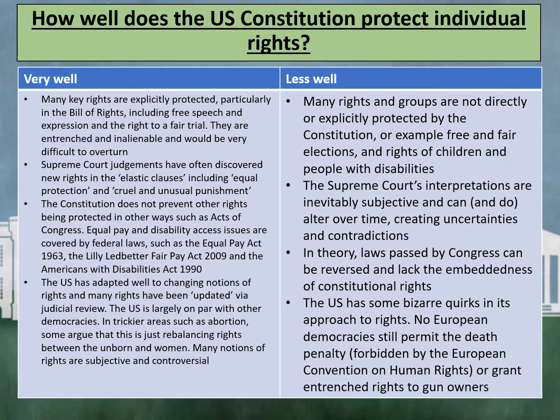There is a recurring argument about whether the US Constitution protects individual rights. Let's start with the argument that the US Constitution protects individual rights very well. Many key rights are explicitly protected, particularly in the Bill of Rights, including free speech and expression and the right to a fair trial. They are entrenched and inalienable and would be very difficult to overturn.